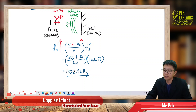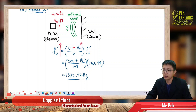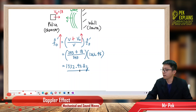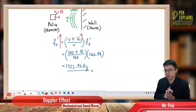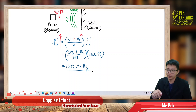1332.92 Hertz is the frequency heard by the policeman when receiving the reflected wave from the wall. That's all for this question — stay tuned for the next one, bye.